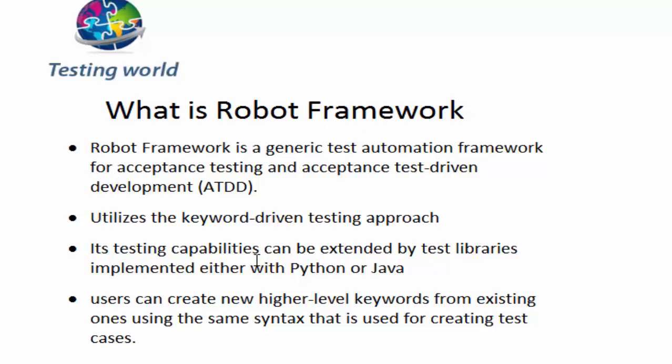Robot Framework also supports automation of mobile-based applications. For example, if I want to test an Android application and perform some tasks on it, that automation can also be done using Robot Framework — but we need to install a library called the APM Library. That library provides many keywords we can use while automating mobile-based applications.